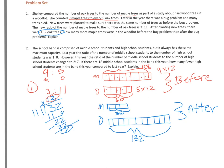So now I have to answer my question. How many more maple trees were in the woodlot before the bug problem than after the bug problem? So I'm looking at maple. And I'm going to find the difference because I want to know how many more. So 108 minus 36, and that will give me 72.